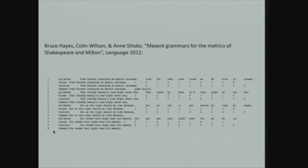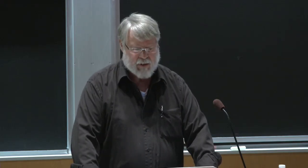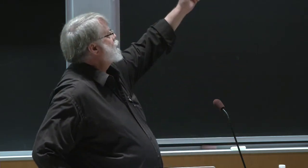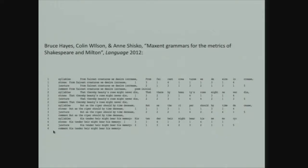Here's a bit of the beginning of the Shakespeare sonnets corpus from Hayes, Wilson, and Shiscoe — Maxent Grammars for the Metrics of Shakespeare and Milton. This is the online corpus which lies behind it. For each line of the sonnet there's actually a series of lines: one that gives the syllables, one that gives the stresses, one that gives the junctures, one that gives comments if any, and so on.